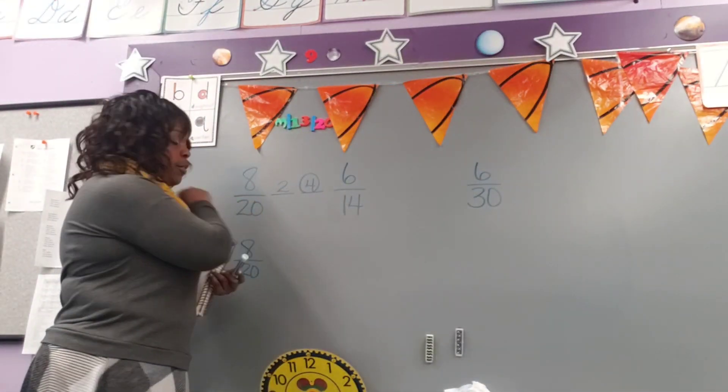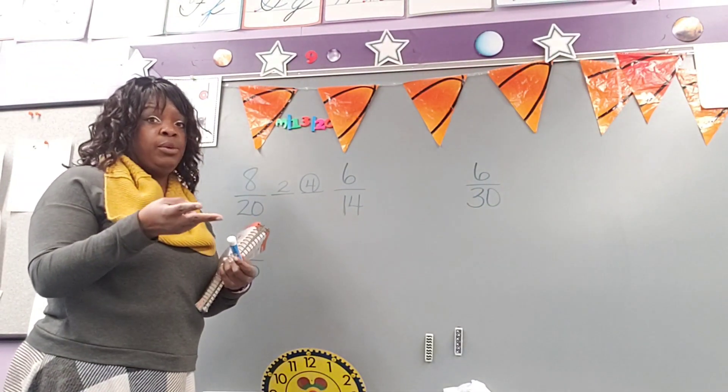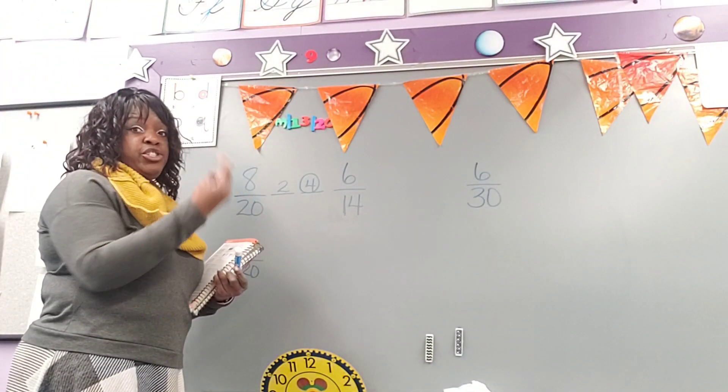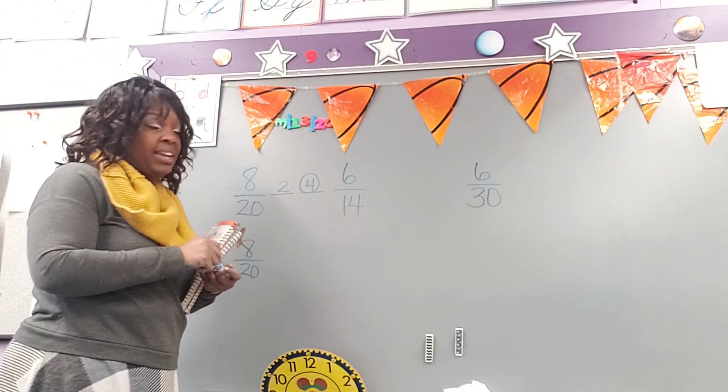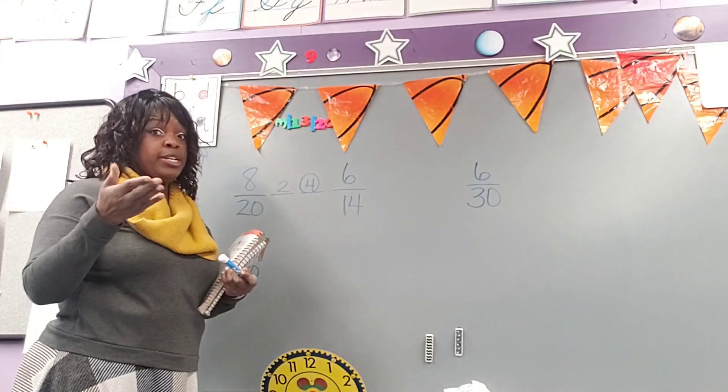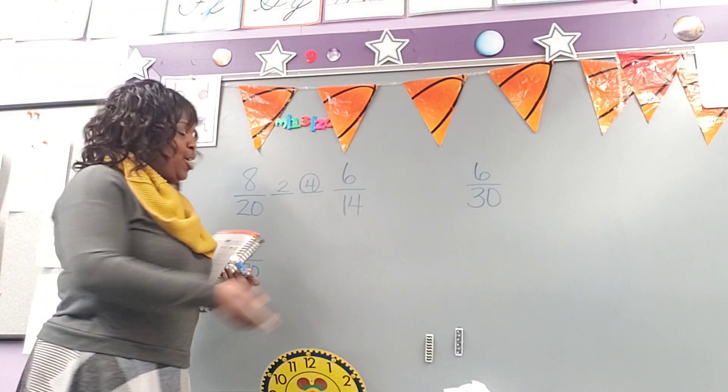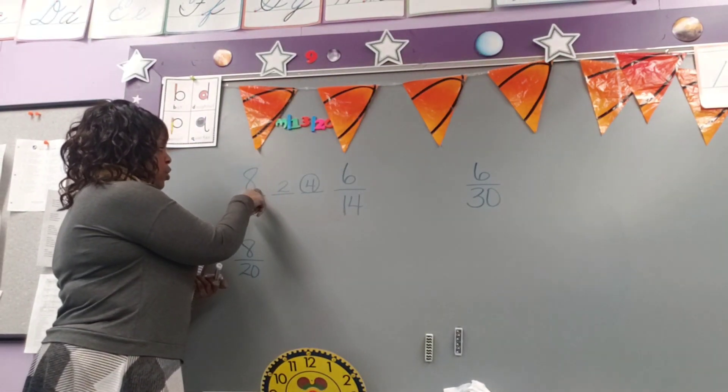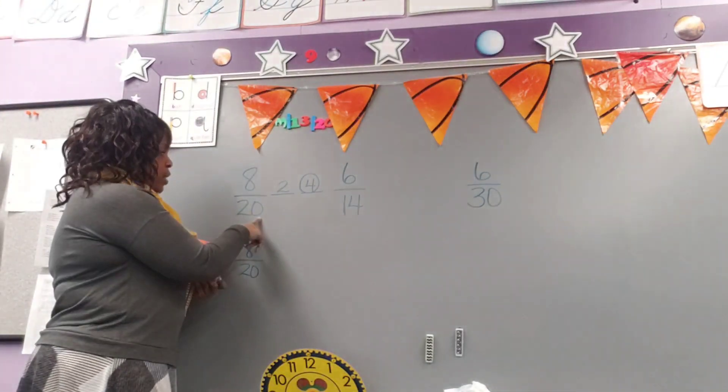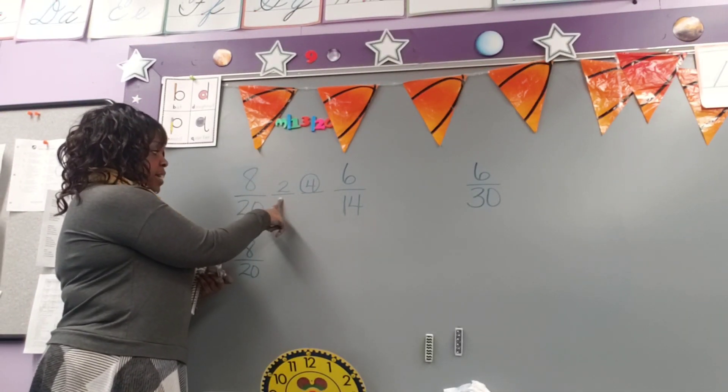We're working with fractions and figuring out the two numbers that you can reduce each fraction by and then choosing the best choice for that. Remember we look at both our numerator and denominator because whatever we do to the numerator, we have to do to the denominator. So we're going to look and think, can we divide 8 by 2? Of course. What about 20? Yes. So 8 and 20 can both be divided by 2.